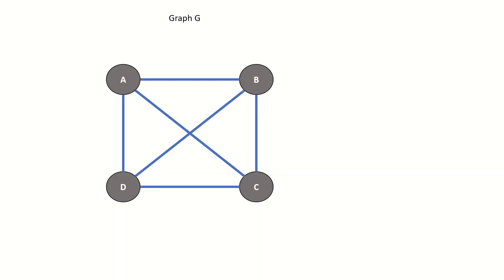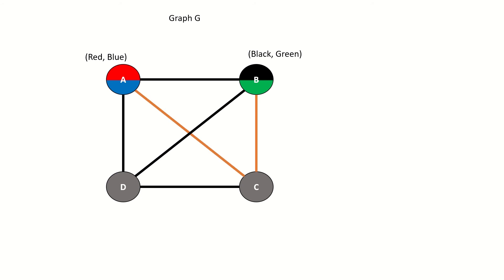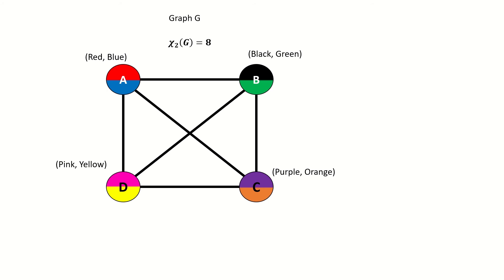To begin our exploration of the properties of fractional colorings, let's look at what happens if we want to b-fold color a complete graph. Say we want to two-fold color the complete graph on four vertices. Say we use red and blue for the first vertex, a. Well, in the next vertex, b, we can't use red or blue, as b is adjacent to a, and a is already using both red and blue. So how about green and black? Moving on to vertex c: c is adjacent to b and a, which means that again we'll need to use two entirely new colors. For every vertex we look at, we'll need two entirely new colors because it's a complete graph. We find that we need to use eight colors to properly two-fold color this graph.